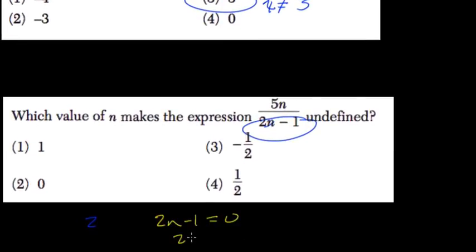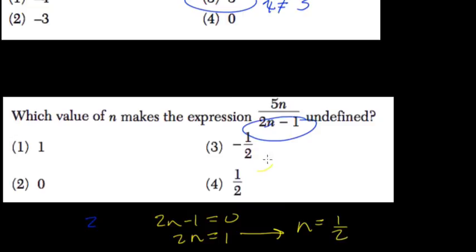Add 1 to both sides: 2n equals 1. Divide both sides by 2, n equals 1 half. So that's choice 4.